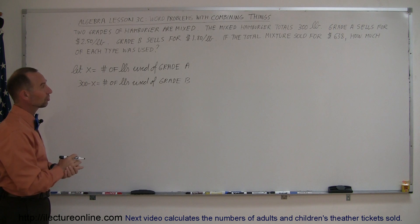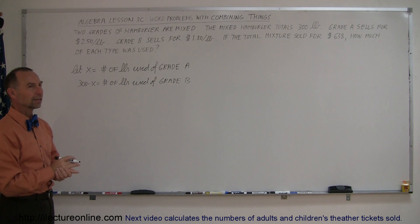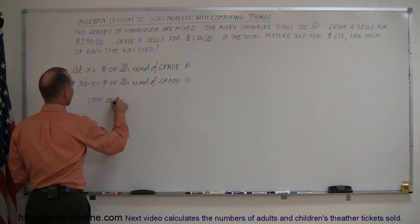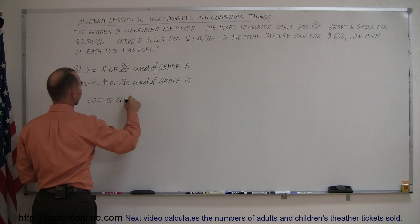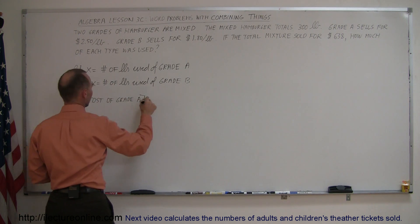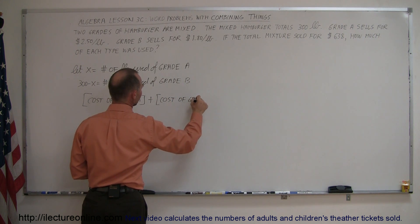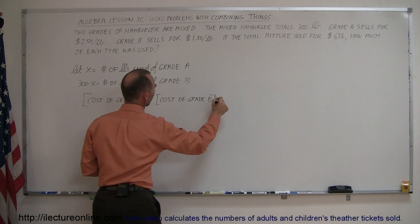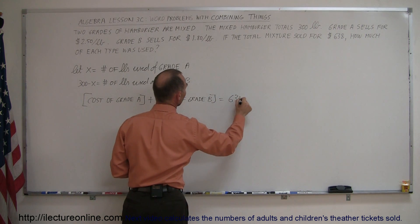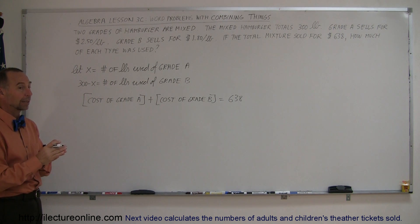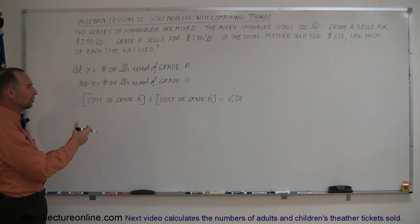Now they tell us that the total mixture sold for $638. So the cost of the grade A hamburger plus the cost of the grade B hamburger totals up to $638. Now how do you figure out the cost for the grade A hamburger? The price per pound times the number of pounds. So for each pound it costs this much, and you multiply times the number of pounds, that gives you the total cost for grade A.